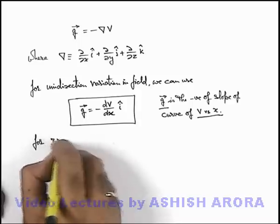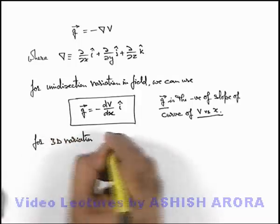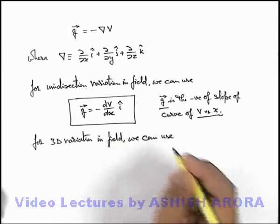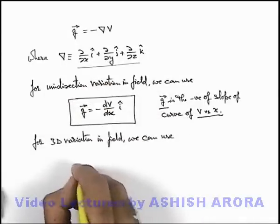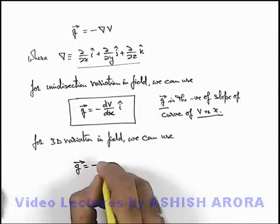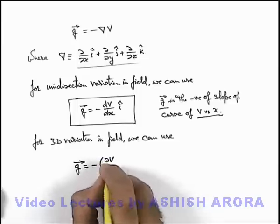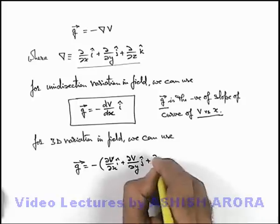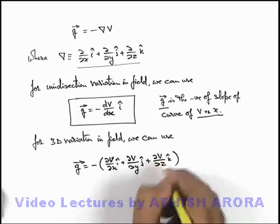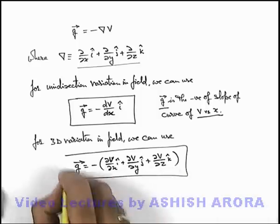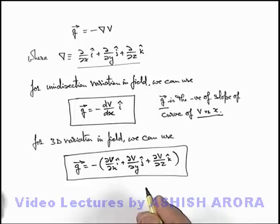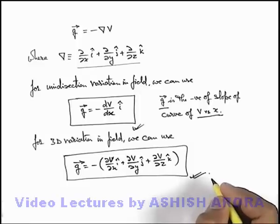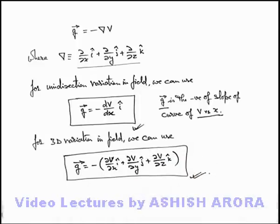For 3D variation in the field, we can directly use the gradient operator. In this situation, g vector is given as the negative of: del V over del x î plus del V over del y ĵ plus del V over del z k̂. This is the expression used for 3-dimensional variation in gravitational field. These results are useful, so keep them in your formula list. Soon we'll see their applications as well.